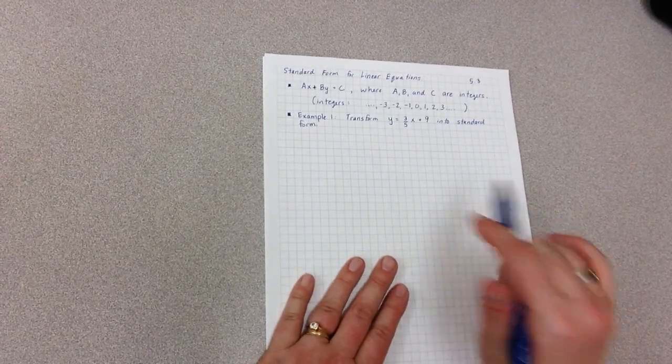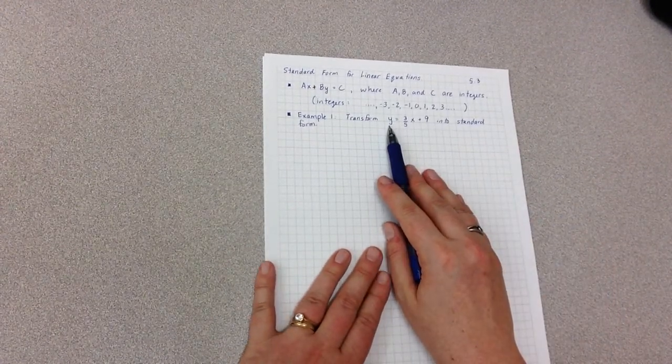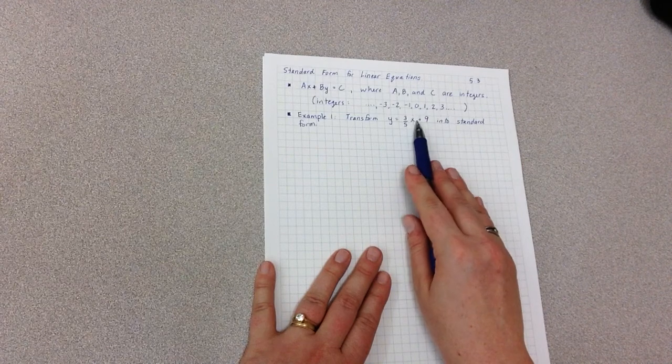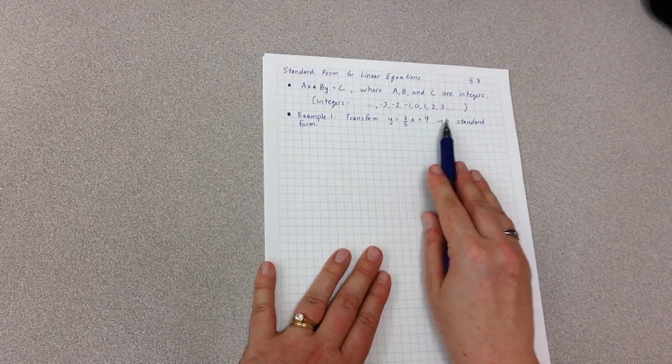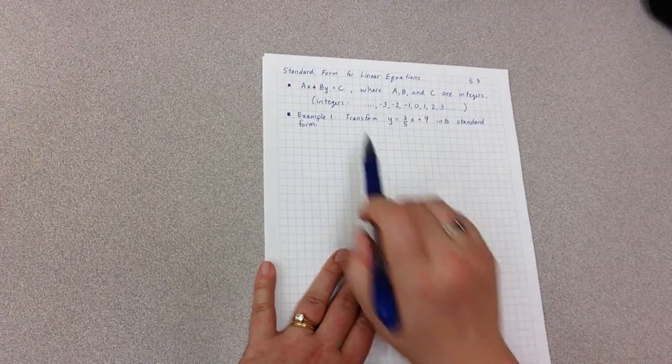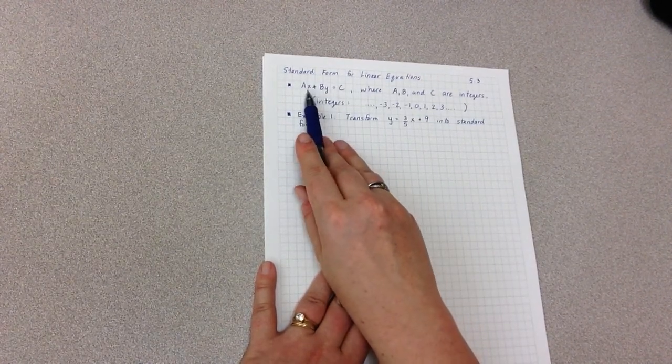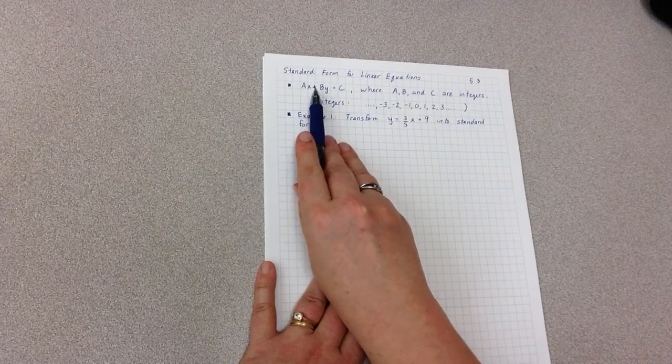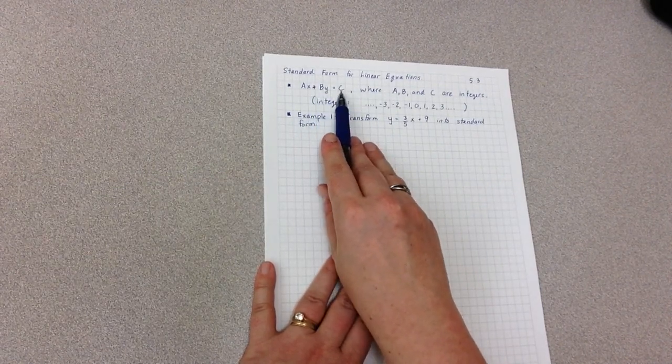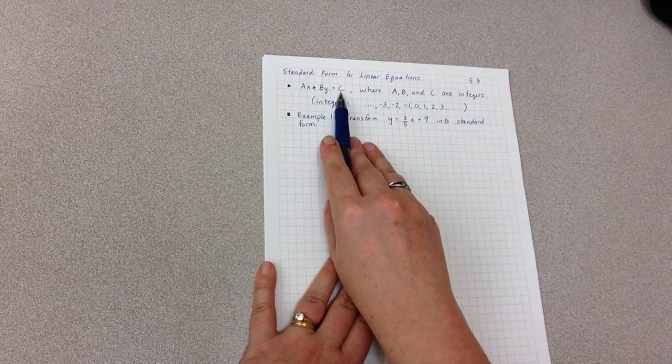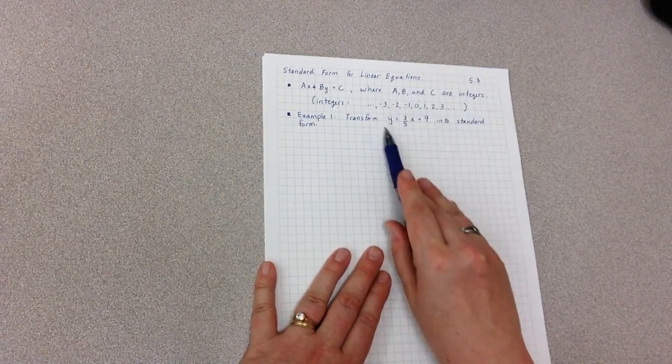The first kind of example we're looking at is transforming an equation in mx plus b form, or slope intercept, into standard form. So the first thing we notice when we look at standard form is that I have everything that are x's and y's on one side, leaving just the plain numbers.